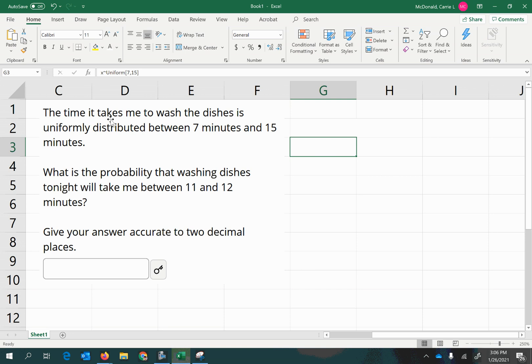The time it takes me to wash the dishes is uniformly distributed between 7 minutes and 15 minutes. What is the probability that washing dishes tonight will take me between 11 and 12 minutes? Give your answer accurate to two decimal places.